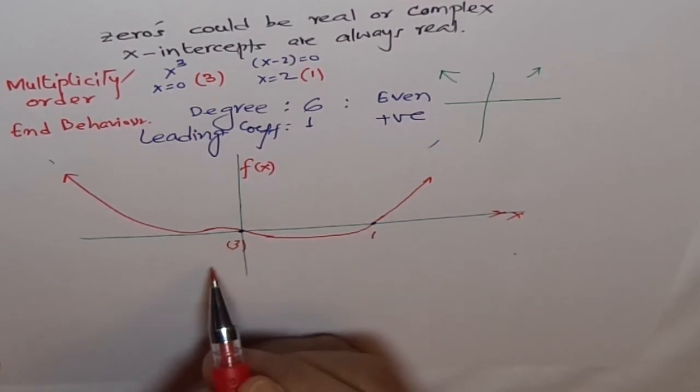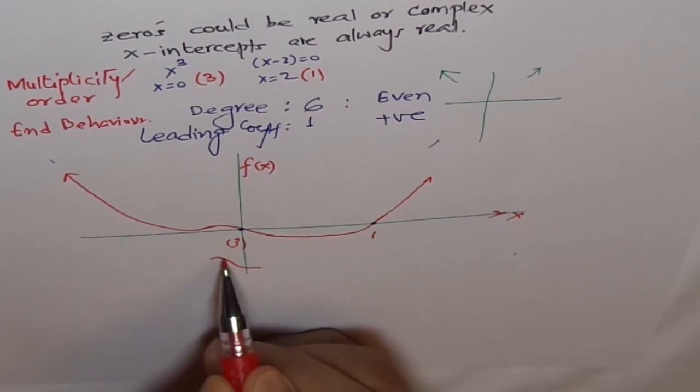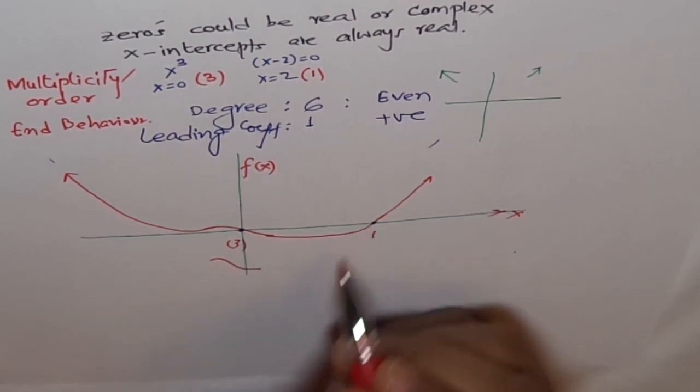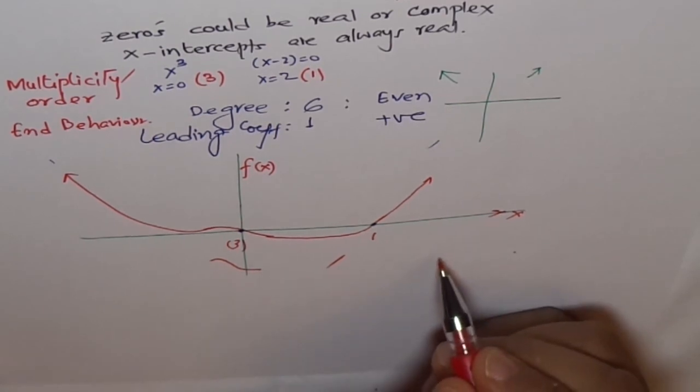If the degree is three, for example here, it goes like a cubic function. If the degree is one, it goes like a linear function.